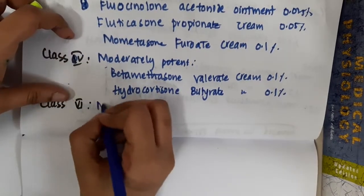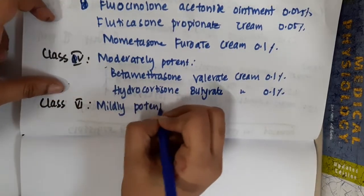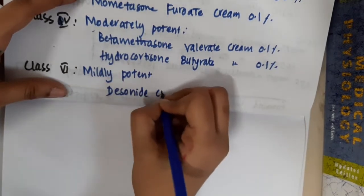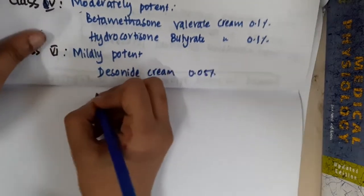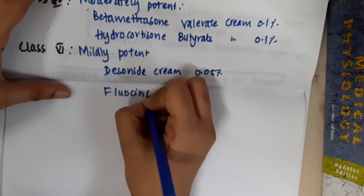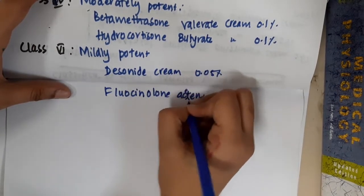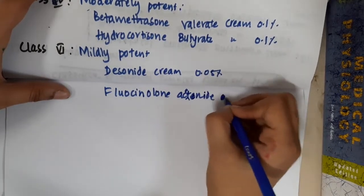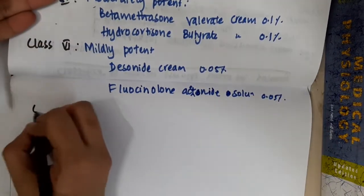Class 6 is mildly potent. This includes desonide cream at 0.05% and fluocinolone acetonide solution at 0.05%.